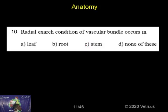Radial exarch condition of vascular bundles occurs in: leaf, root, stem, or none of these?